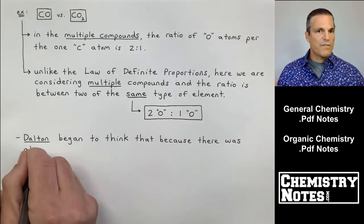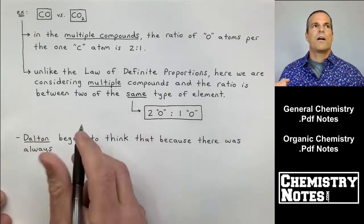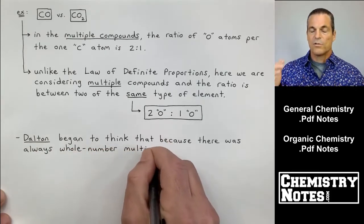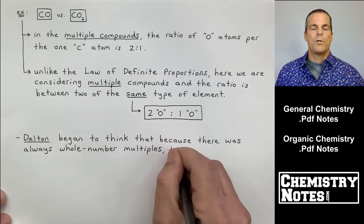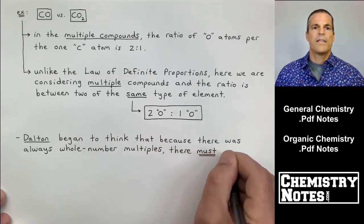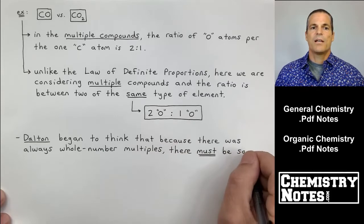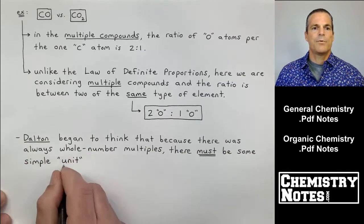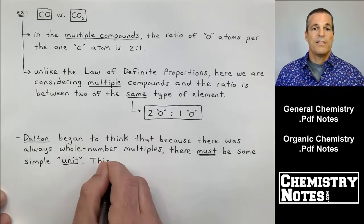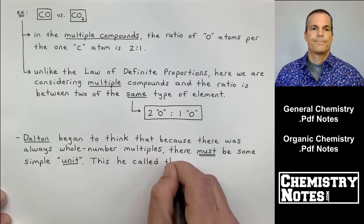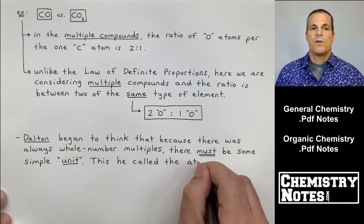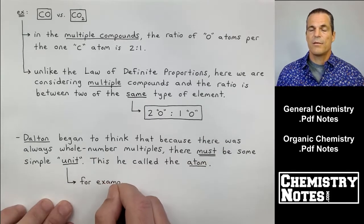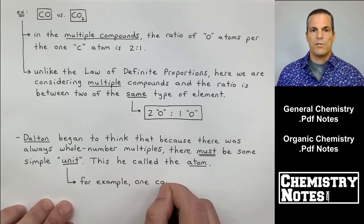So we've got the law of conservation of mass. We've got the law of definite proportions and the law of multiple proportions. So with that, in this little bullet point here, it says, Dalton began to think that because there was always whole number multiples, there must be some simple unit. And this unit he called the atom.